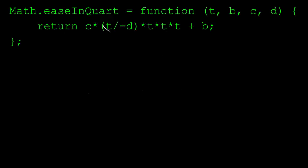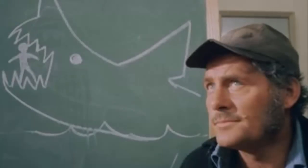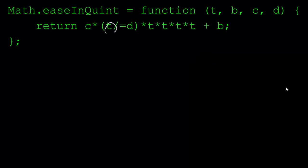Likewise, ease-in quart has 4 t's, or t to the power of 4, so it's a quartic equation. And finally, we have ease-in quint, which is a quintic equation with a power of 5.